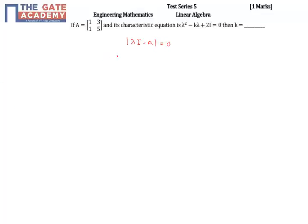I will do the same thing for the given matrix A. So λI is [[1, 0], [0, 1]], it is a 2 by 2 matrix, minus A is [[1, 3], [1, 5]]. So this is λI minus A.